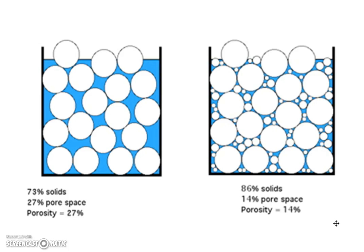And you can see that in these two pictures. On the left, this is well-sorted. They're all the same size and shape. You can see it says the porosity is 27%. The picture on the right is not well-sorted. You've got all those little small spheres that are filling up the pores, so the porosity has dropped down to 14%.